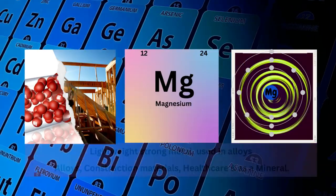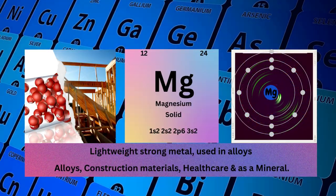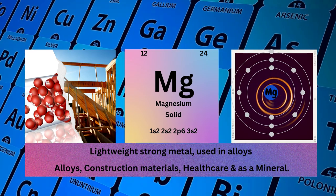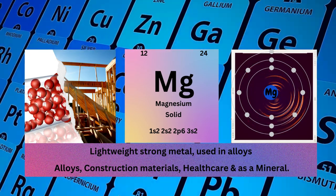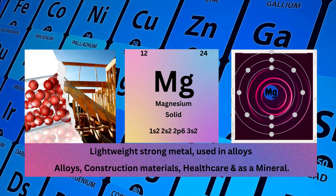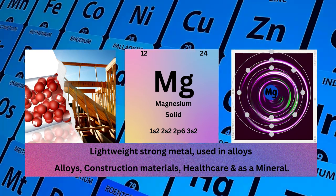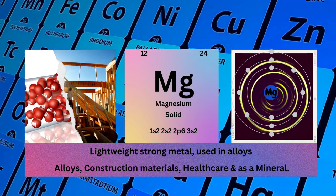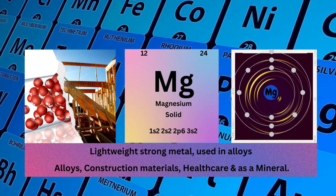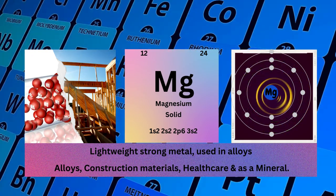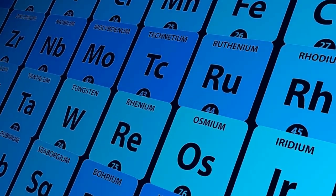Magnesium, atomic number 12, mass number 24, symbol Mg, state solid, electronic configuration 1s²2s²2p⁶3s². Physical properties: lightweight, strong metal, used in alloys. Magnesium used for alloys, construction materials, healthcare, and as a mineral.